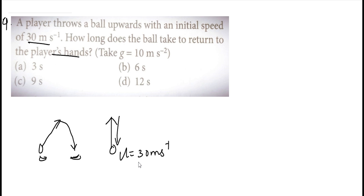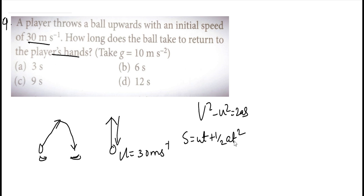The second and third equations: v squared minus u squared equals 2as. And s equals ut plus half a t squared. The simpler equation is v minus u equals a into t. Acceleration equals velocity divided by time. That's how we use these equations.